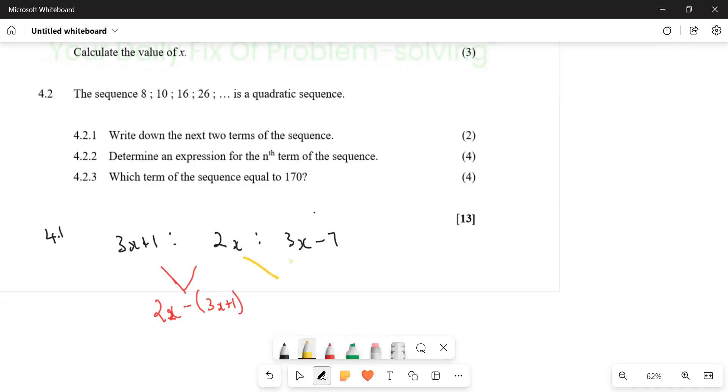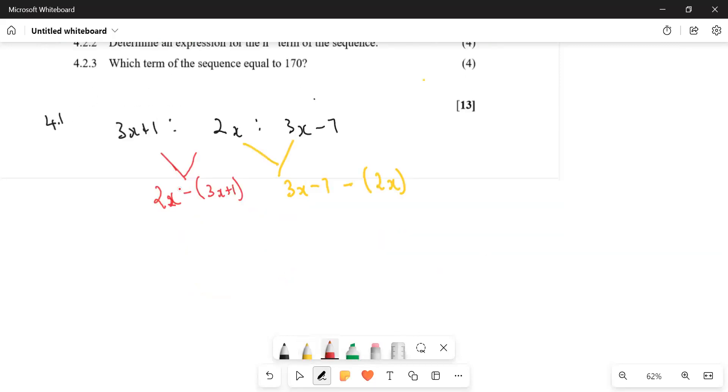So this one, what do you have for that one? 3x minus 7 minus open bracket 2x. Okay, let's simplify it. What do we get if we simplify this? Let's start with the red one. It's 2x minus 3x minus 1. It's going to be minus x minus 1.